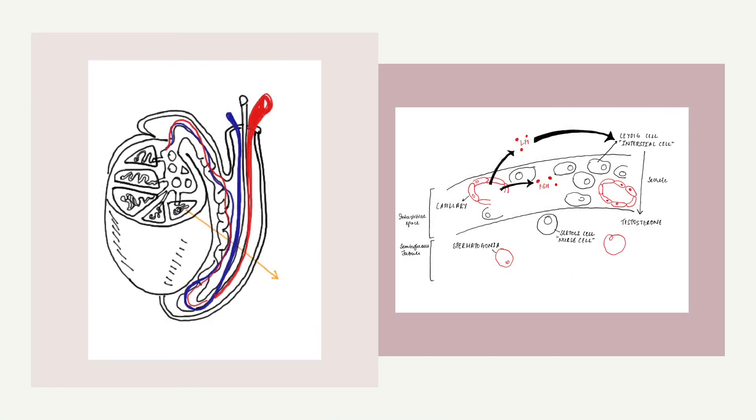Within the seminiferous tubules, the germ cells develop into sperms through the process of spermatogenesis.